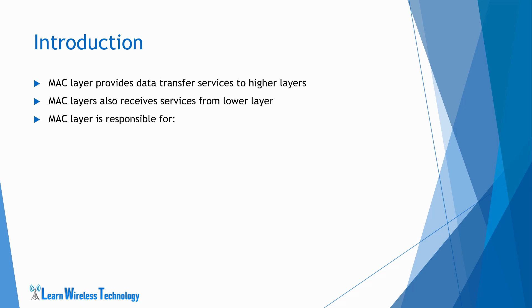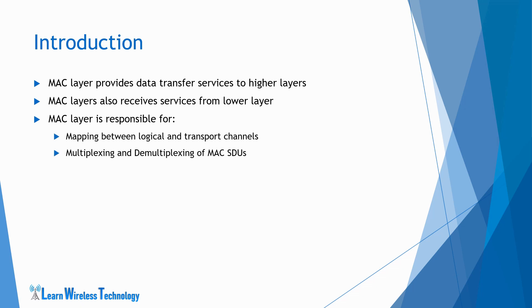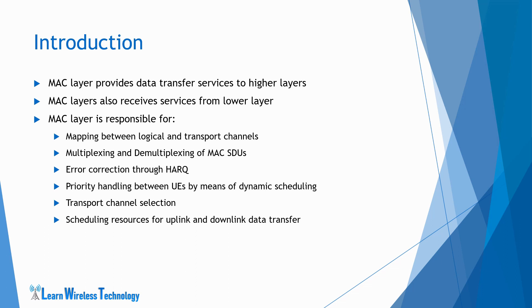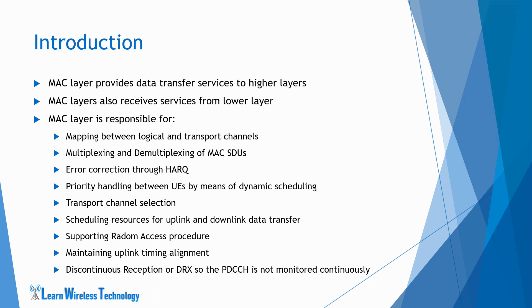Let's have a look at the list of some main functions performed by the MAC layer. MAC layer is responsible for mapping between logical and transport channels, multiplexing and demultiplexing of MAC SDUs, error correction through HARQ, priority handling between UEs by means of dynamic scheduling, transport channel selection, scheduling resources for uplink and downlink data transfer, supporting random access procedure, maintaining uplink timing alignment, and discontinuous reception or DRX so the PDCCH is not monitored continuously.